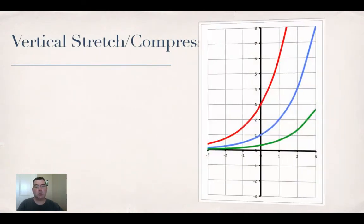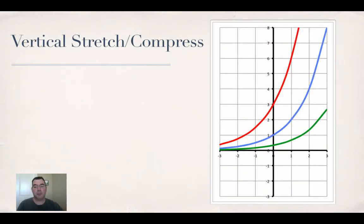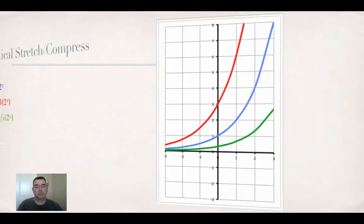Vertically stretching or compressing, the blue one is still y equals 2 to the x, but what I've done to create the red one is I've stretched it by a factor of 3. So that is 3 times 2 to the x, and what I've done to create the green one is I've actually divided the function by 3 or multiplied it by 1 third. So that's how you can stretch or compress those graphs vertically.